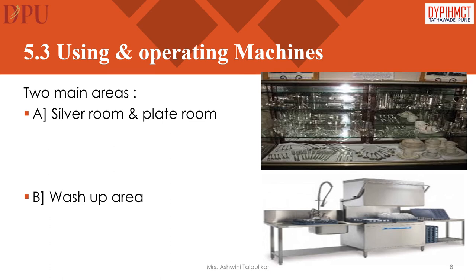Using and Operating Machines: The two main areas where machines are used and operated are the silver room and plate room, and the wash-up area. The silver and plate room is the store room for all clean earthenware and metal tableware. In small hotels, this room is combined with the wash-up. They maintain an adequate stock of all tableware, earthenware, and glassware for service, together with a slight surplus stock to handle emergency situations. The room is equipped with cupboards and shelves.